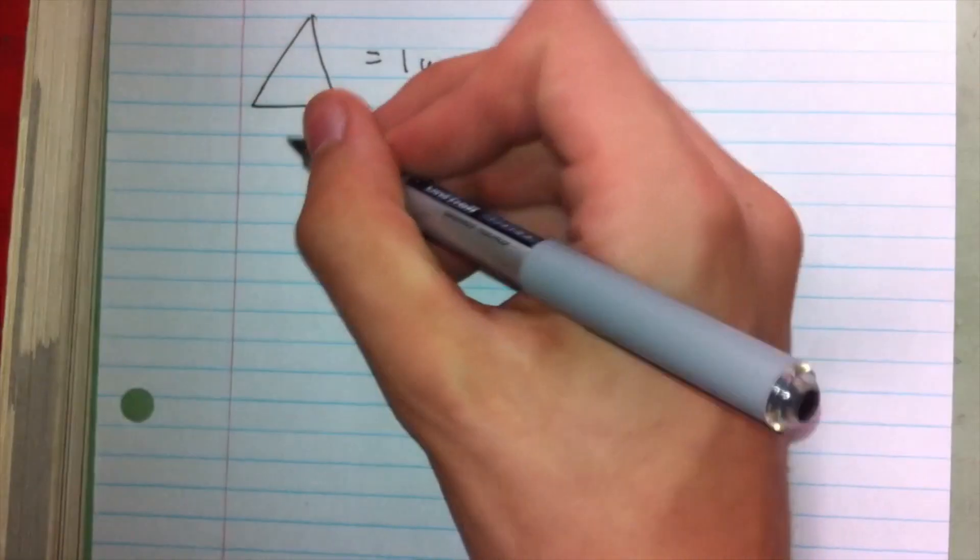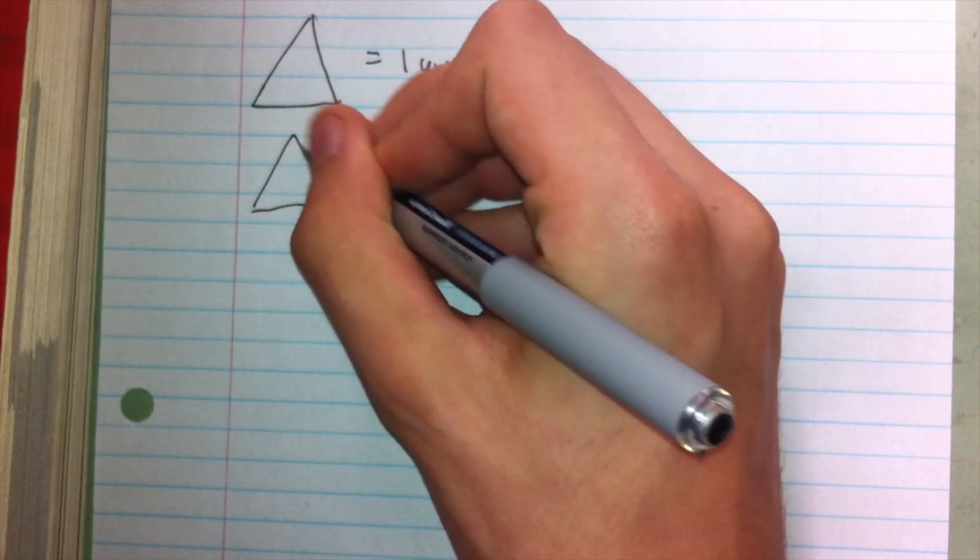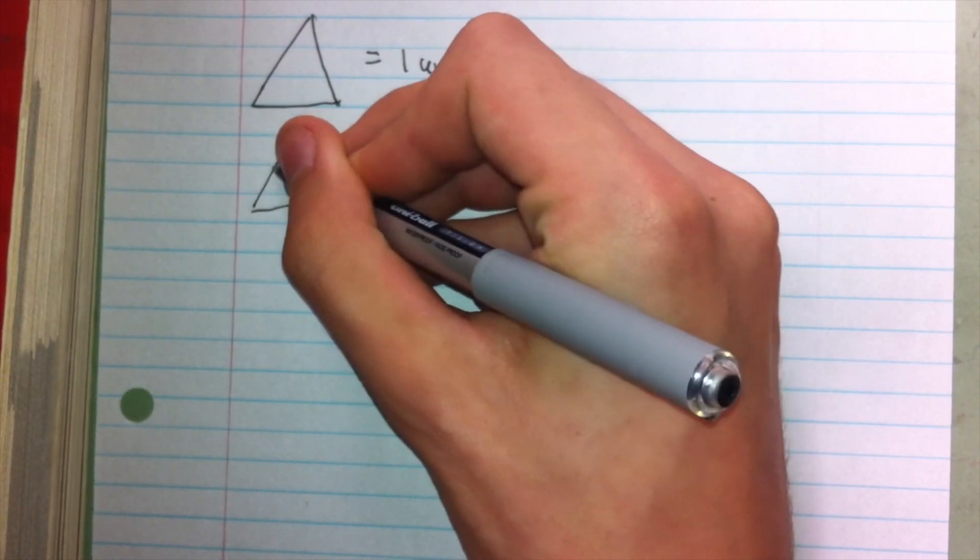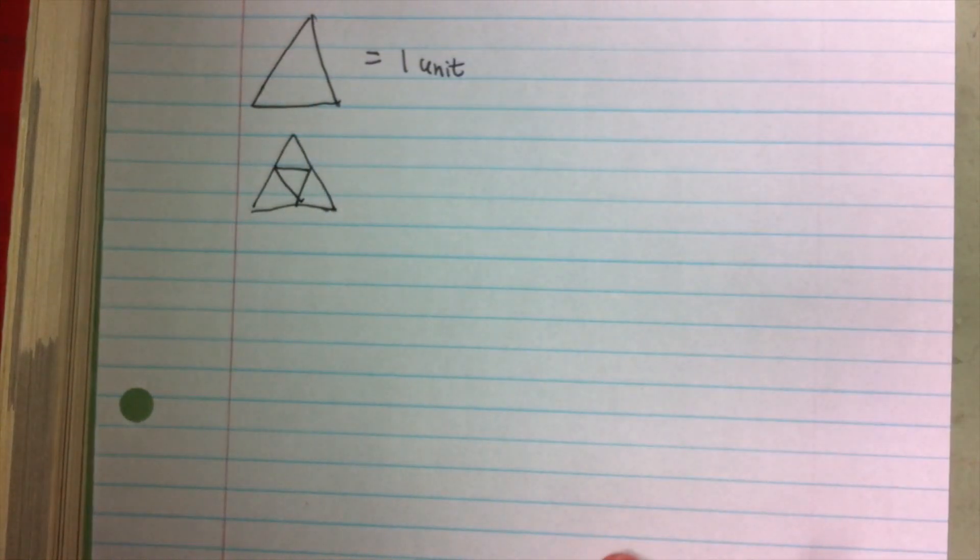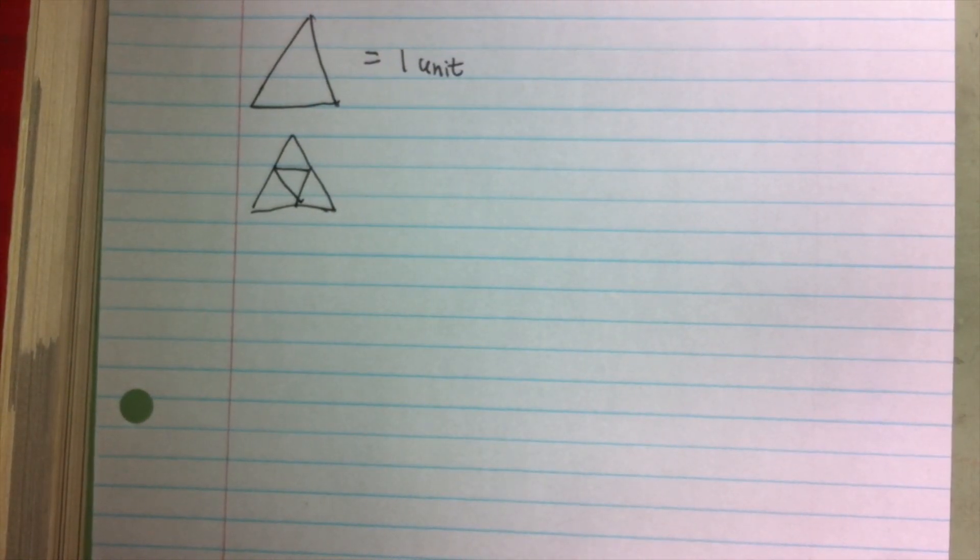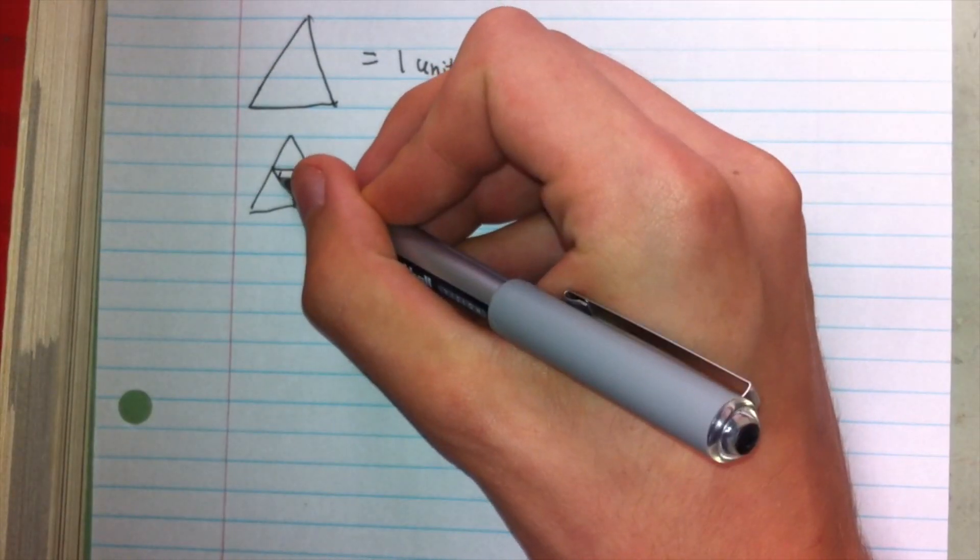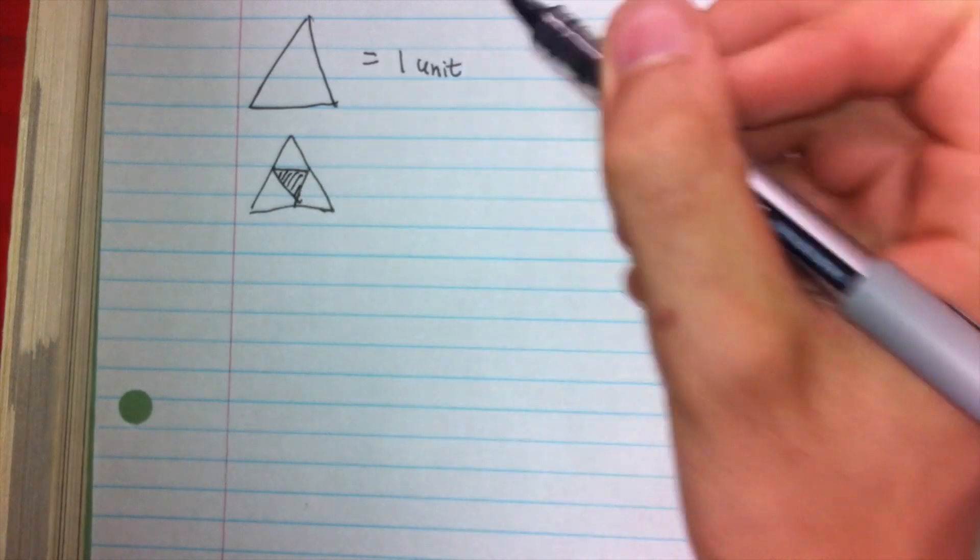The next stage is we draw another equilateral triangle, and this splits Sierpinski's Triangle into four equal equilateral triangles. And the way we're going to look at this is as if this new triangle is a cutout out of the original triangle.